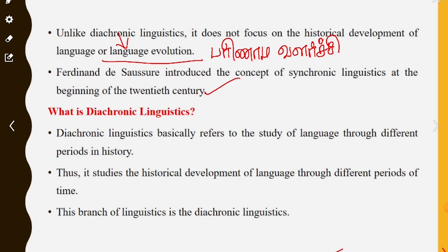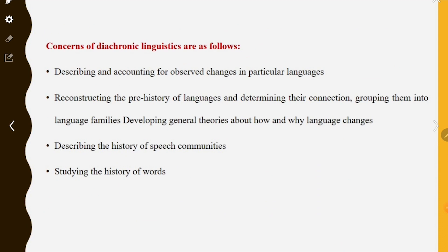What is diachronic linguistics? Diachronic linguistics basically refers to the study of language through different periods in history. It studies the historical development of language through different periods of time. The concerns of diachronic linguistics include describing and accounting for observed changes in particular languages.